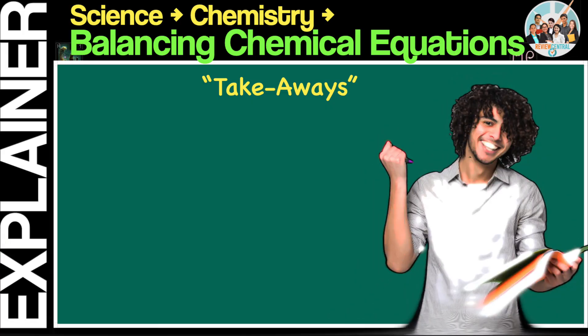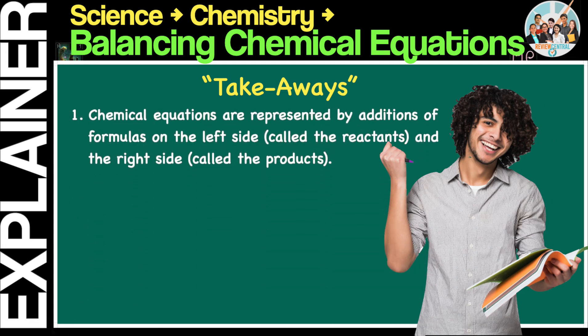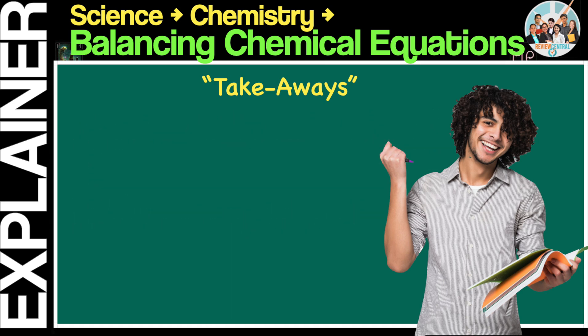Let's list down our takeaways from this explainer, shall we? 1. Chemical equations are represented by additions of formulas on the left side, called the reactants, and the right side, called the products. 2. A formula may contain a single element, example H2, or a combination of elements, that is, a compound, example H2O. 3. The reactants and products are typically separated by an arrow, although in some books and even exams, an equal sign may be used.